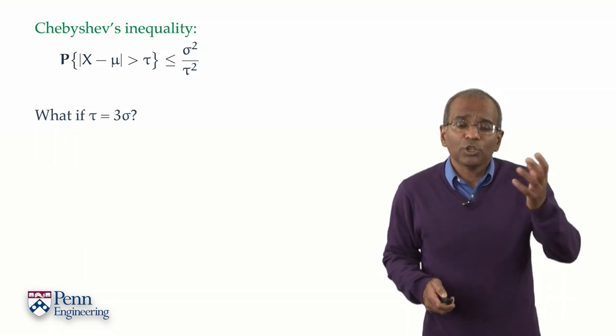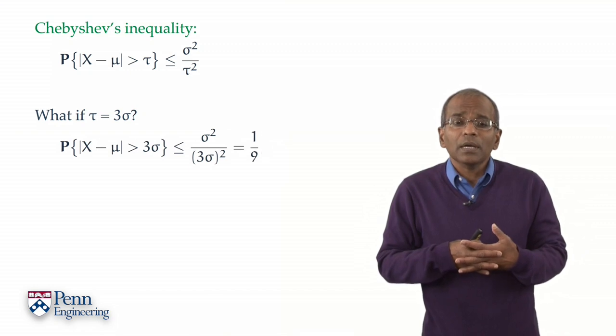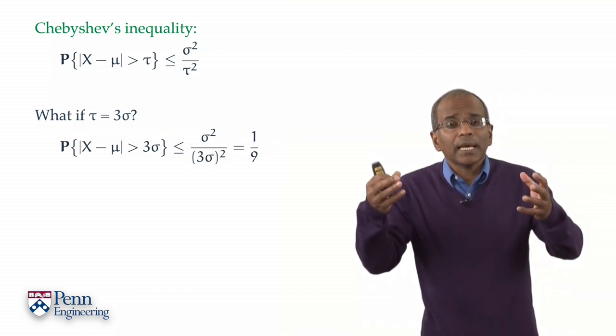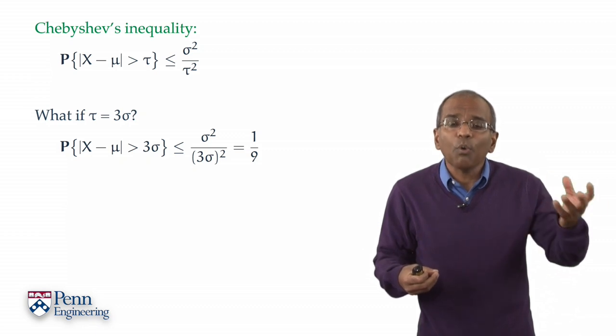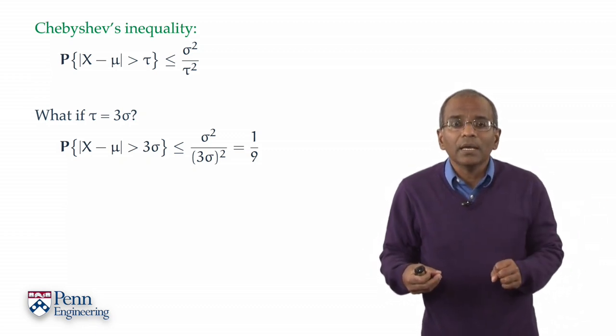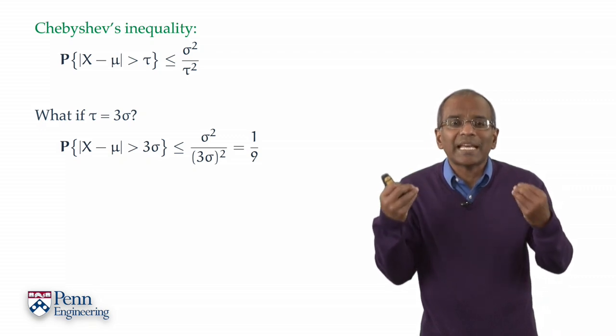Well, we just put in tau equal to three times sigma into Chebyshev's inequality. And we observe that the probability that you deviate by three standard deviations or more from the center is no more than one in nine, approximately 10 percent.